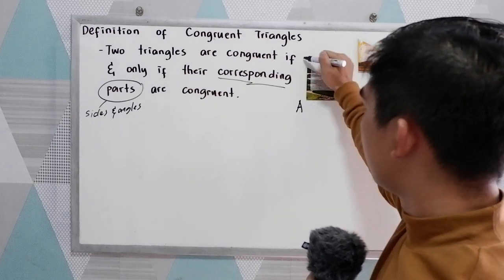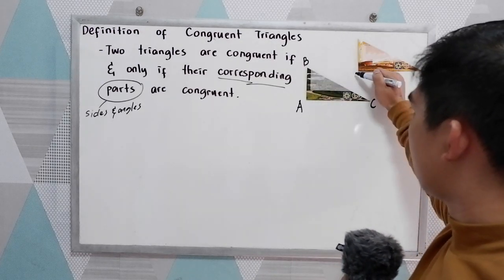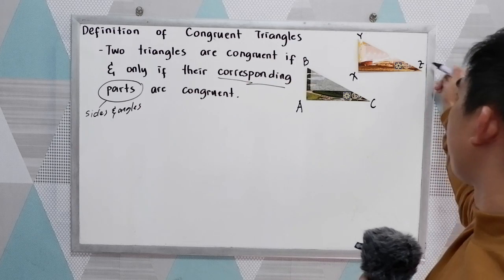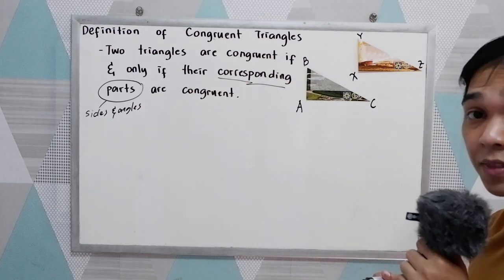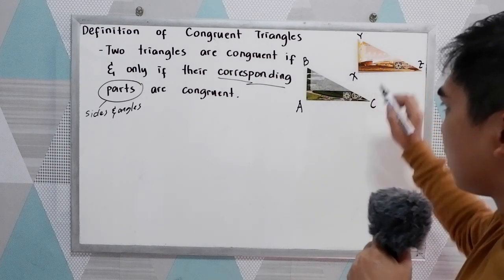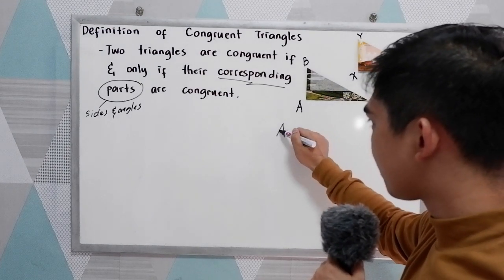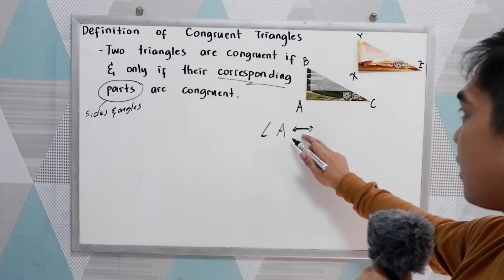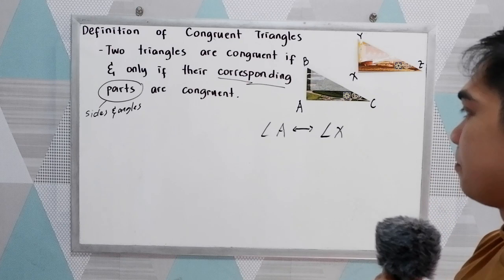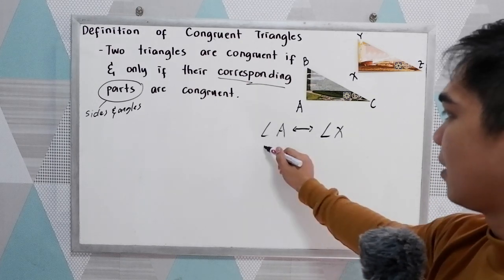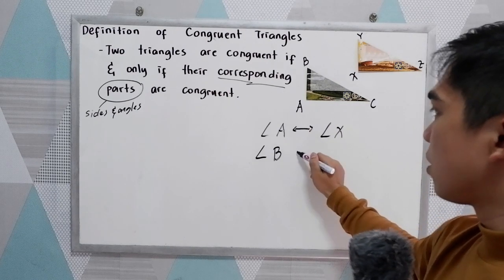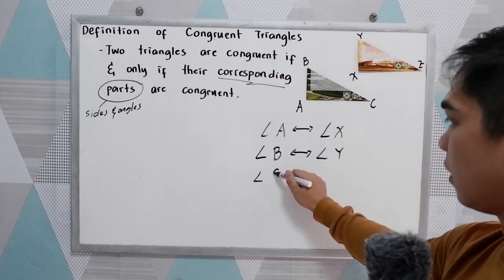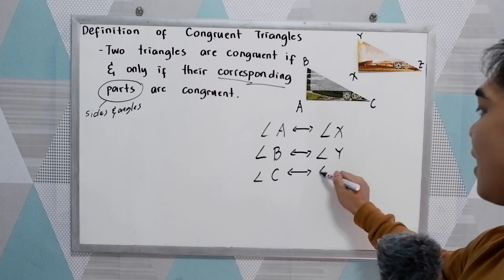Let's name the triangles. This is A, B, C. And the other triangle is X, Y, and Z. Now let us name the corresponding angles and corresponding parts. Angle A corresponds — this is our symbol for correspondence — corresponds to angle X. Next, angle B corresponds to angle Y. And angle C corresponds to angle Z.